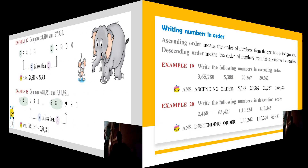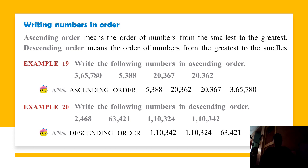Now let us move on to the next concept: writing numbers in order. There are two orders — ascending order and descending order. Ascending order means increasing order — writing the numbers from the smallest to the greatest. Descending order means writing the numbers from the greatest to the smallest, which is also called decreasing order.